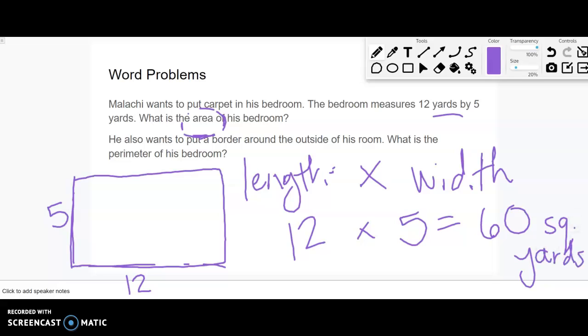He also wants to put a border around the outside of his room. What is the perimeter of his bedroom? So imagine there's some sort of border on his wall, some wood or wallpaper that goes around the outside. So we're trying to find the perimeter. With the perimeter, how do we find it? Need to add up all the sides.